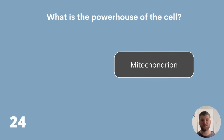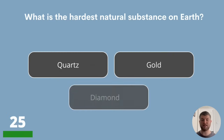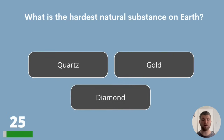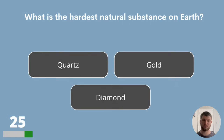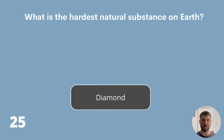Question 25. What is the hardest natural substance on Earth? Quartz, gold or diamond? The answer is diamond.